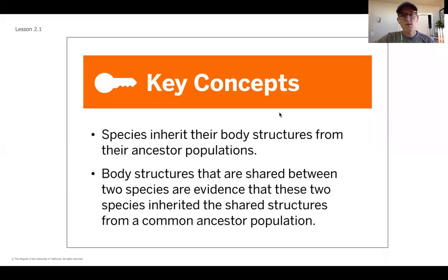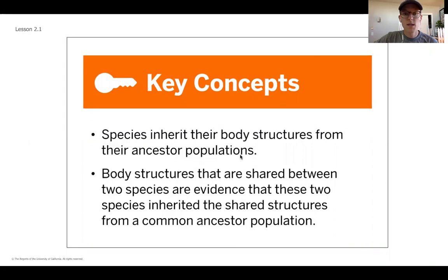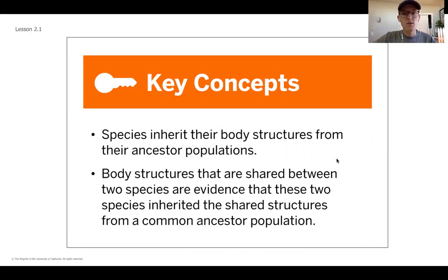To review what we learned in chapter one, we started to talk about similarities between the body structures of different species. We said that species are going to inherit those body structures — meaning they are passed down from ancestor populations, populations of a specific species that lived before the current one. We also learned that body structures shared between two species shows that at some point those species shared a common ancestor.